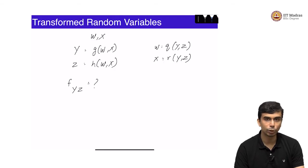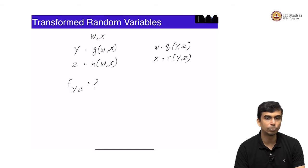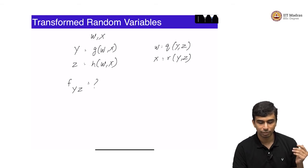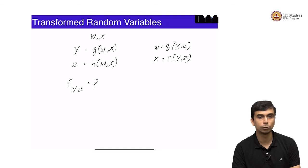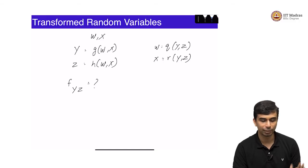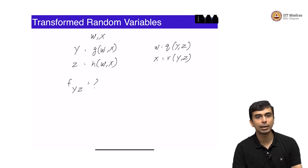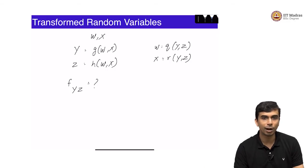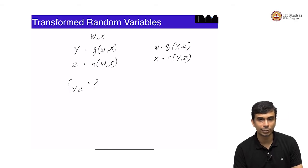Let us take the extreme case where g of w comma x is w and h of w comma x is also w. In this case y is always going to equal z, which is also going to equal w. That means from w and x you can get y and z, but from y and z you cannot get back w and x because x is effectively lost — you cannot recover x from y and z. So in such a situation it is not an invertible transform.